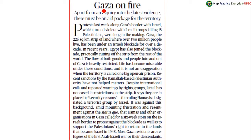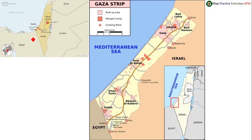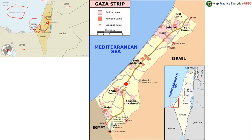Gaza is in editorial news today. Gaza is a strip attached to Israel. Israel has a boundary with Egypt, Jordan, Syria, Lebanon, and Gaza, and it has ocean access towards the Mediterranean Sea. When Gaza is magnified, only a few settlements are there along with refugee camps. Gaza has only one coastal line — the Mediterranean Sea.